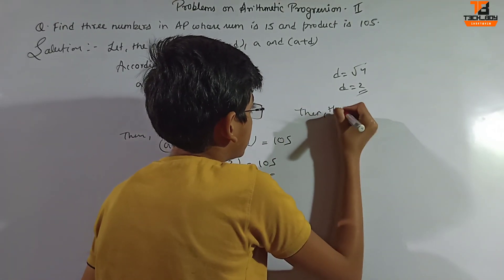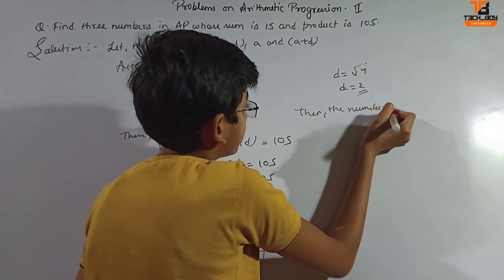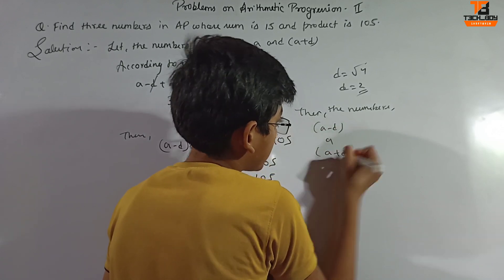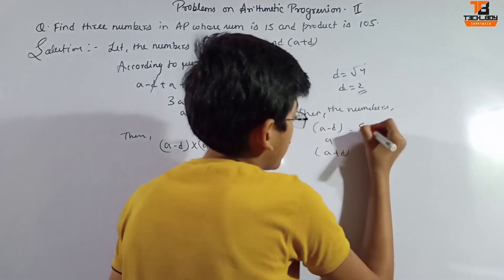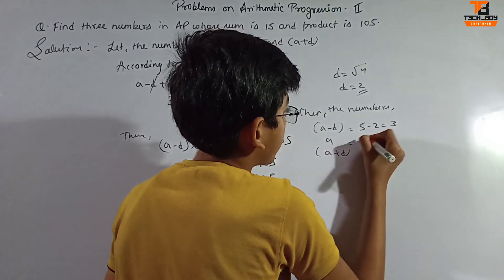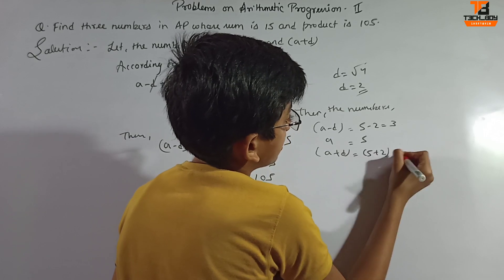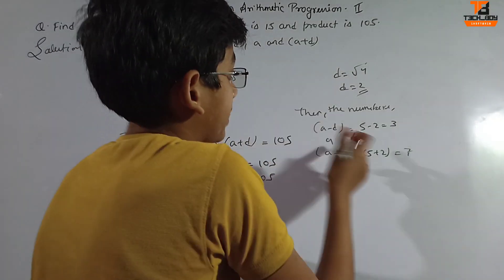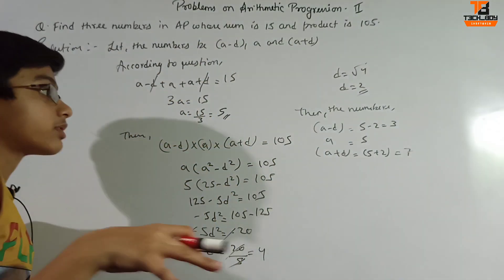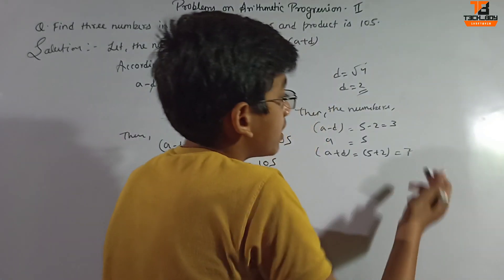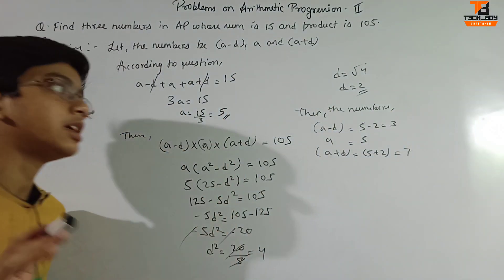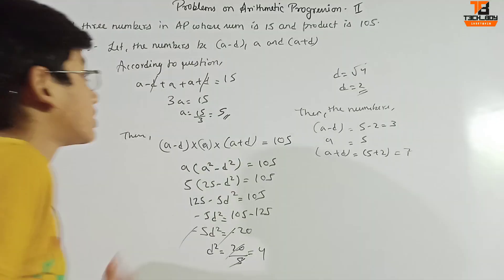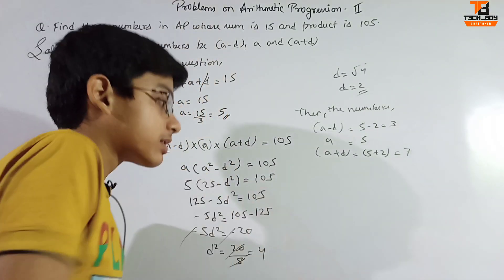With a=5 and d=2, the three numbers are: a−d = 3, a = 5, and a+d = 7. Verification: sum is 3+5+7 = 15 ✓, and product is 3×5×7 = 105 ✓. That's our second question, done successfully.